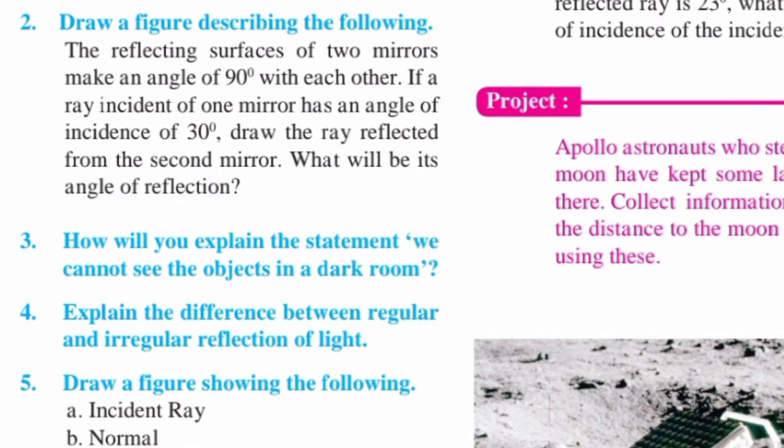Question number two: draw a figure describing the following. The reflecting surfaces of two mirrors make an angle of 90 degrees with each other. If the ray incident on one mirror has an angle of incidence of 30 degrees, draw the ray reflected from the second mirror and find its angle of reflection.